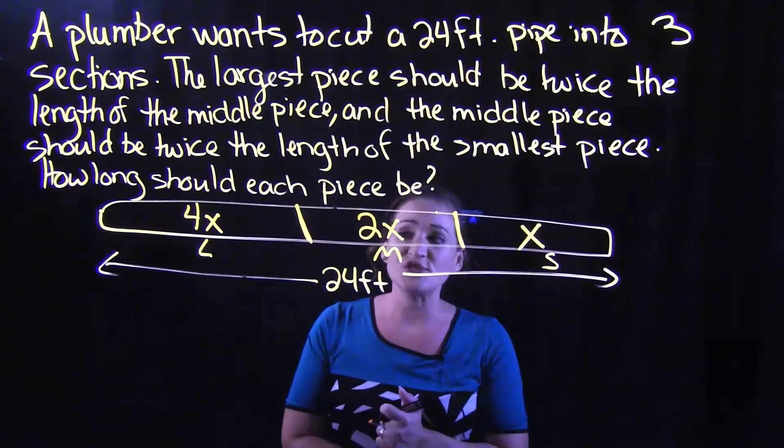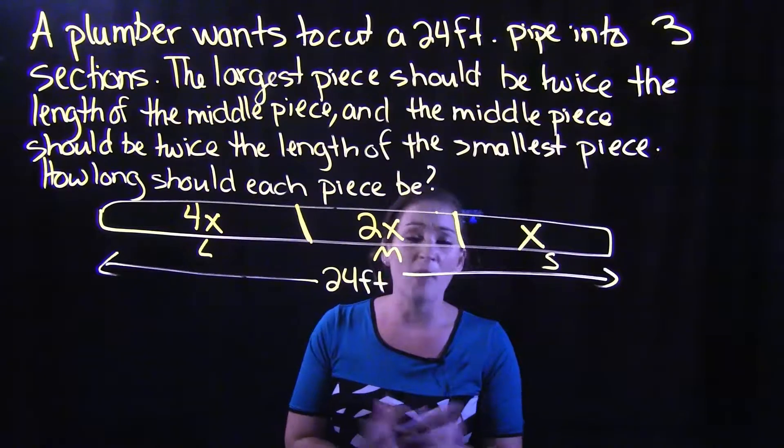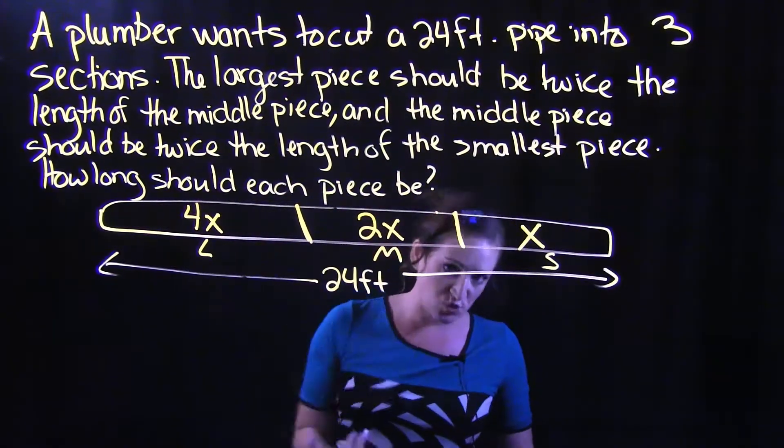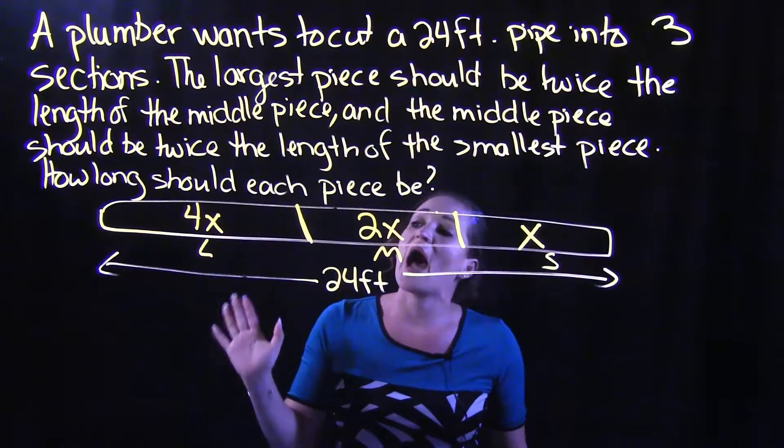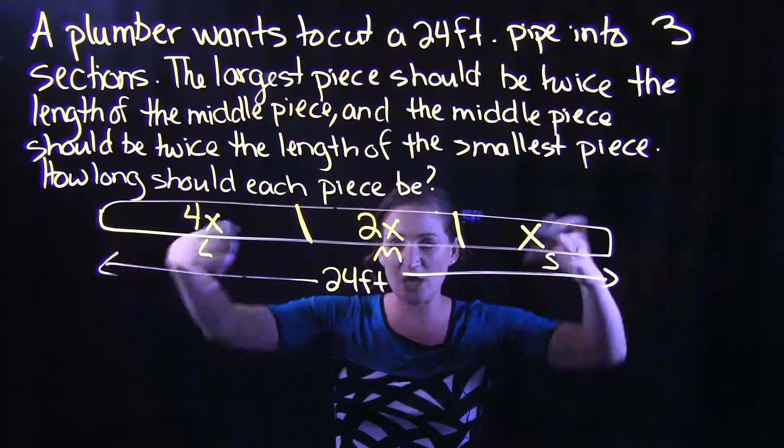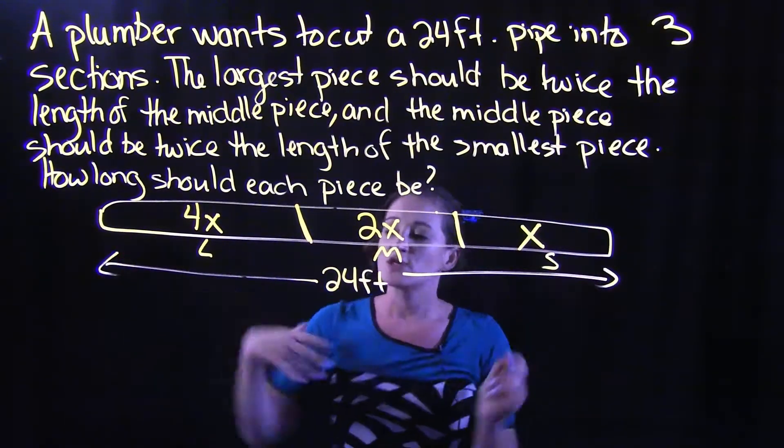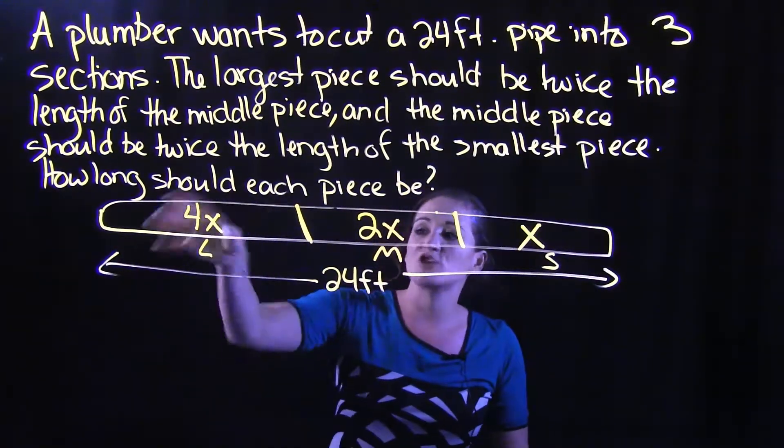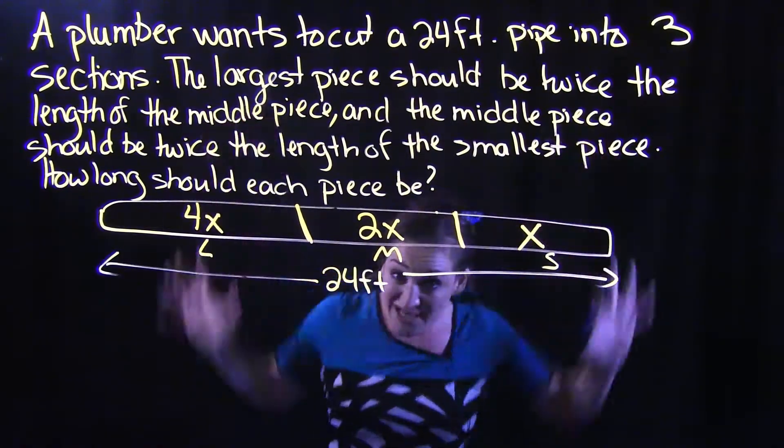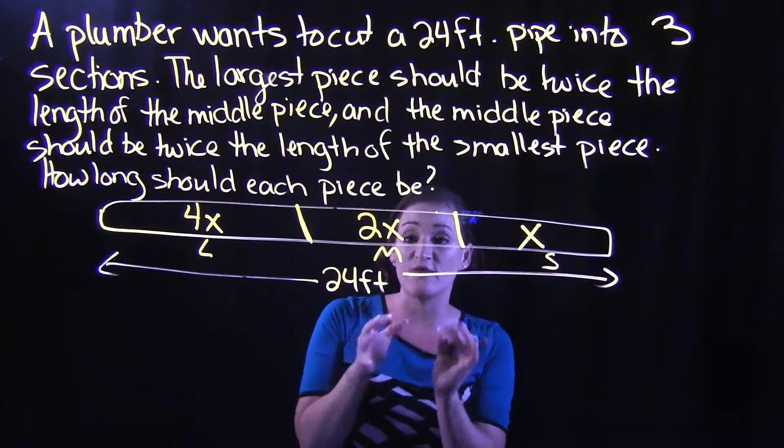So let's go ahead and set up our equation now that we have a value for each one of these pieces. So I know that this 24-foot pipe, that's how long this is all together. So it would make sense that large piece plus middle piece plus small piece all together are going to equal 24 feet.